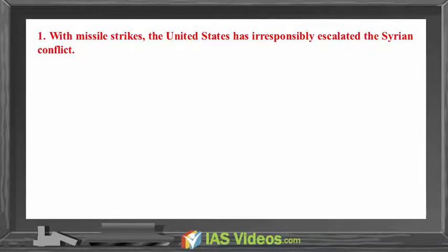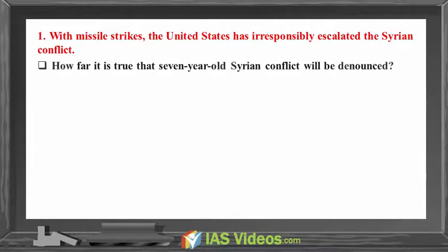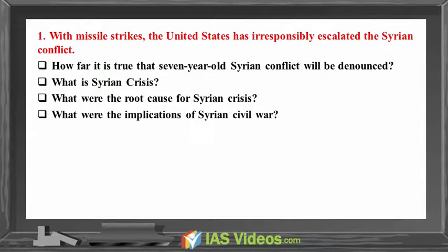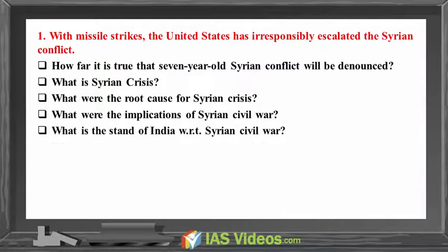With missile strikes, the United States has irresponsibly escalated the Syrian conflict. How far is it true that the 7-year-old Syrian conflict will be denounced? What is the Syrian crisis? What were the root causes for the Syrian crisis? What were the implications of the Syrian civil war? What is the stand of India with regards to the Syrian civil war?